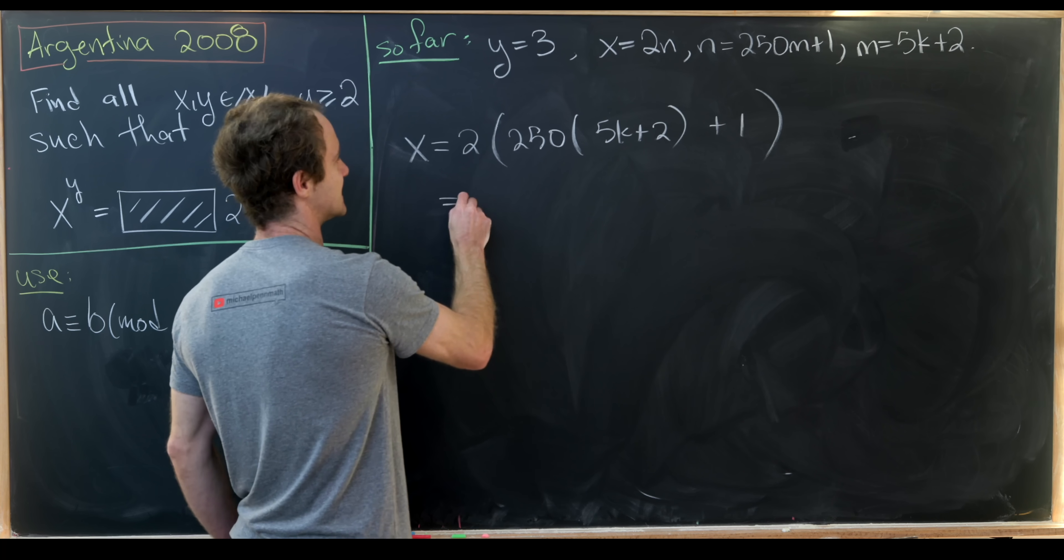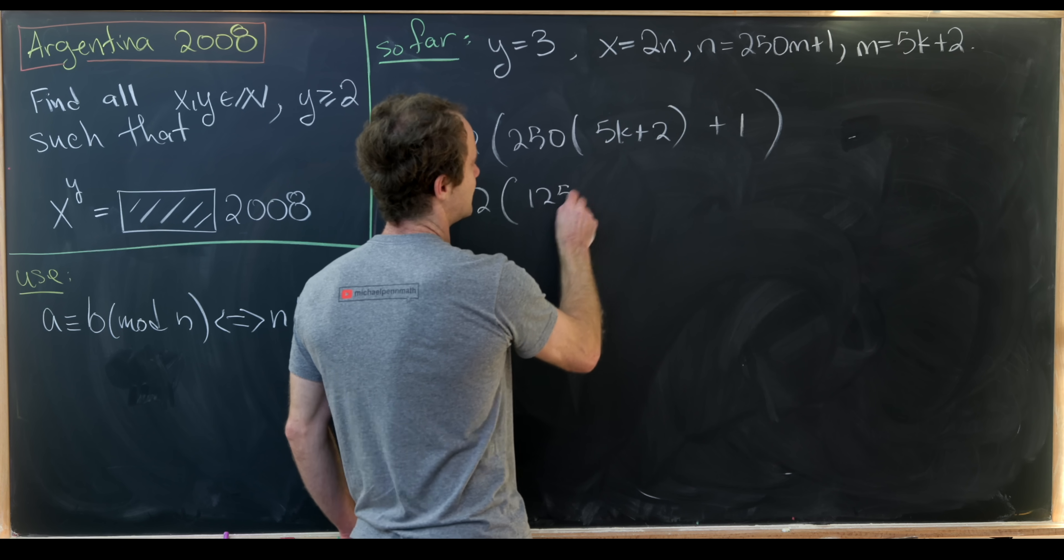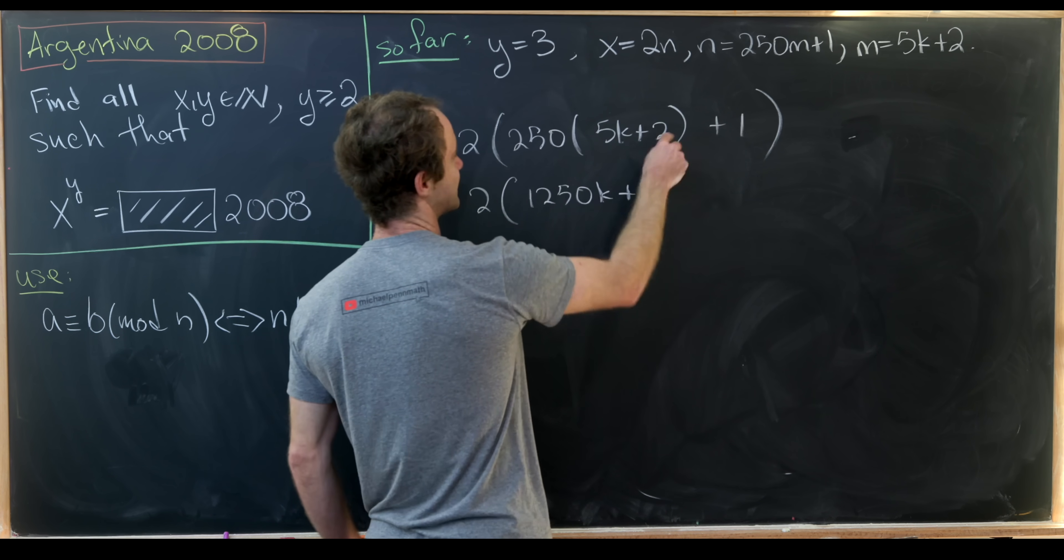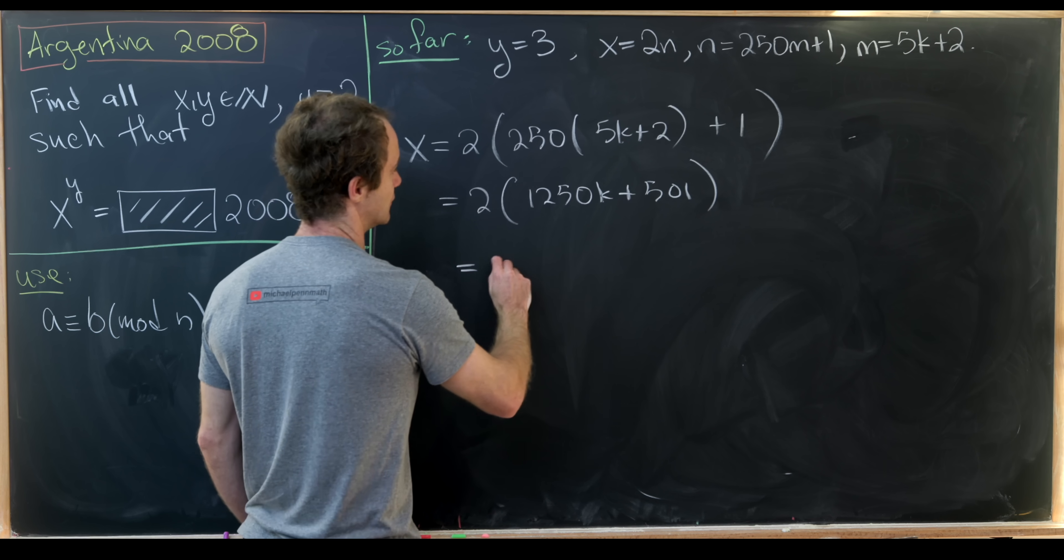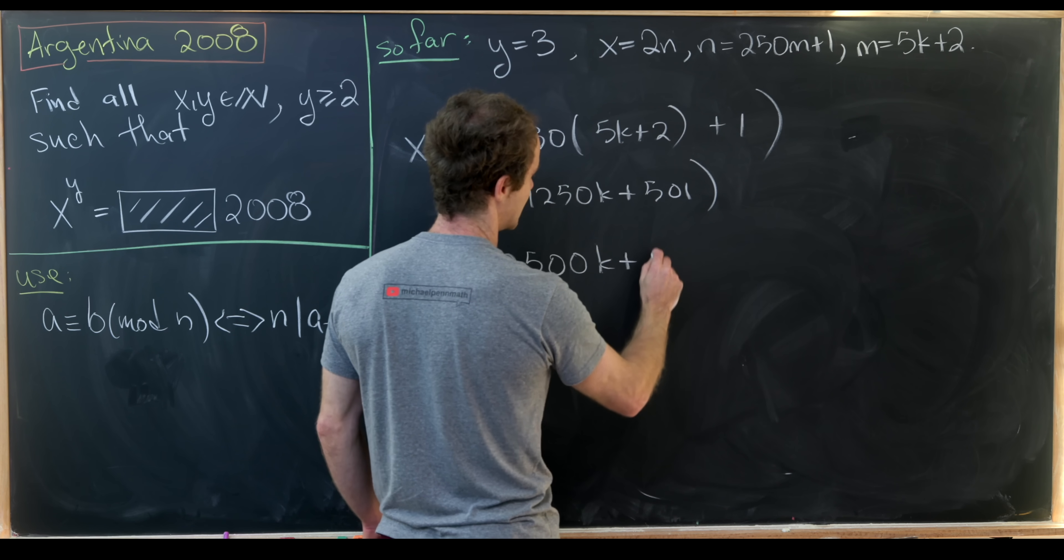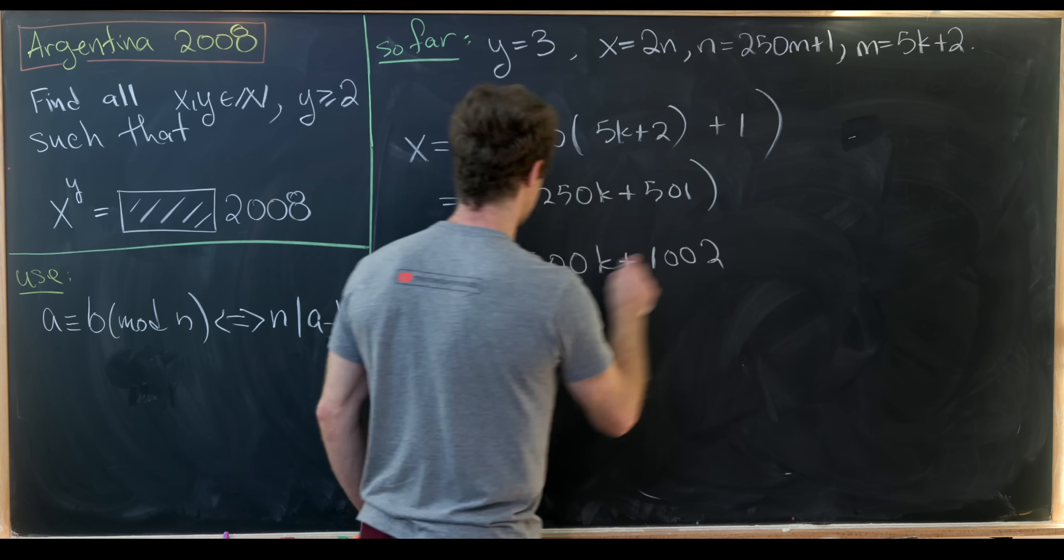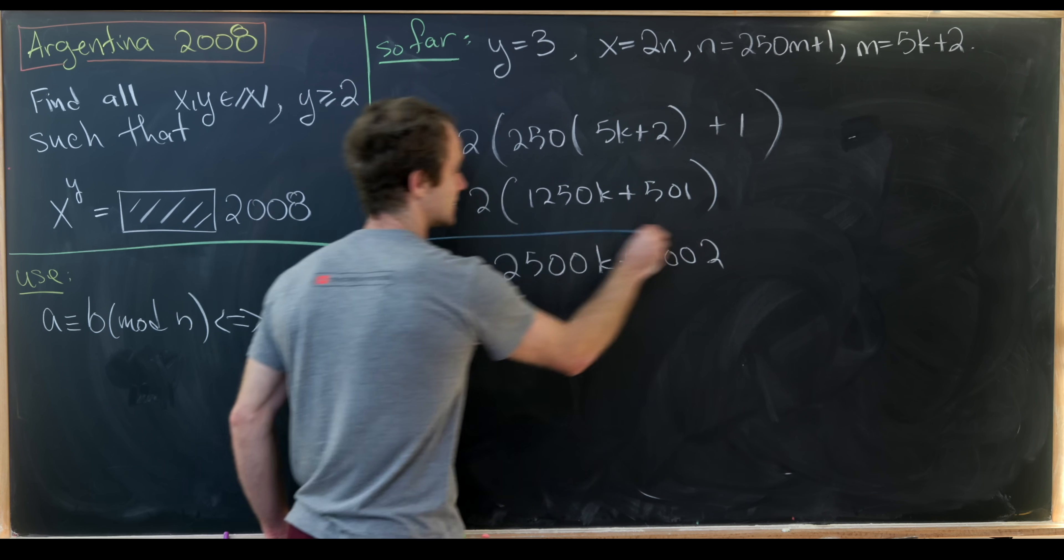So that's going to give us 2 times 1250k plus 501. And then multiplying the 2 through will give us 2500k plus 1002. So that means x has that formula.